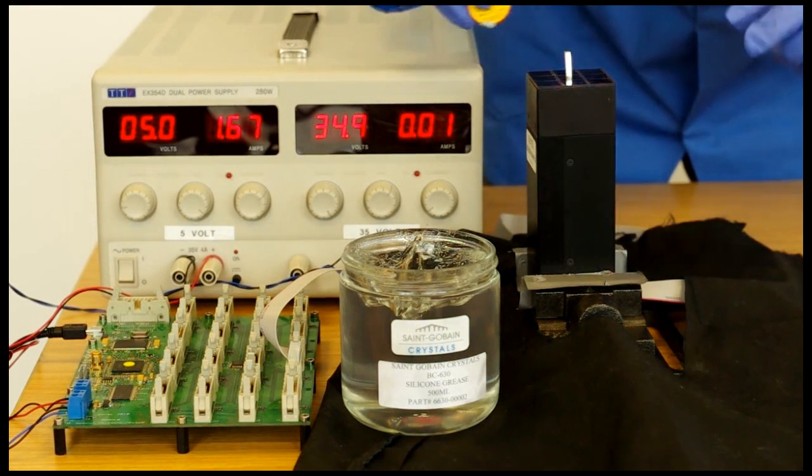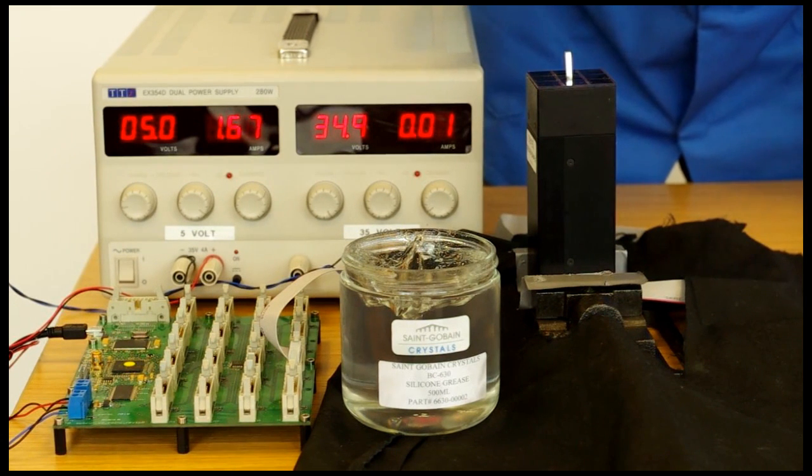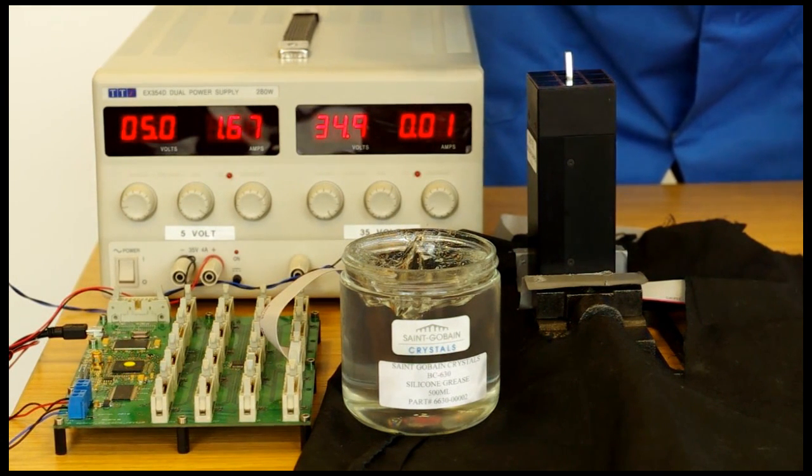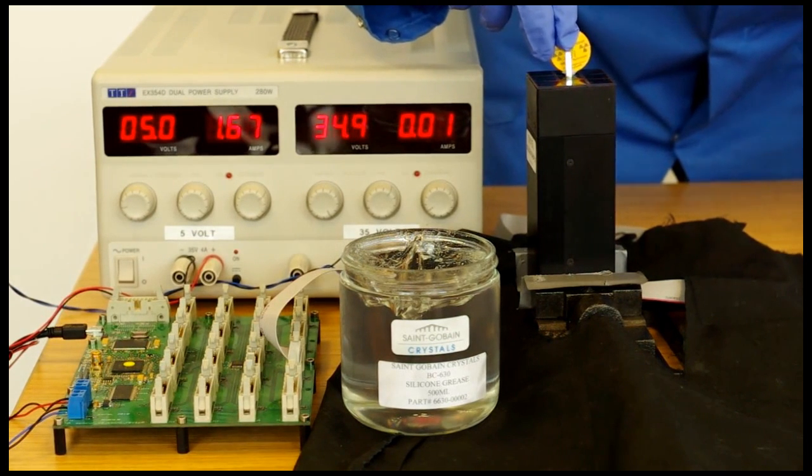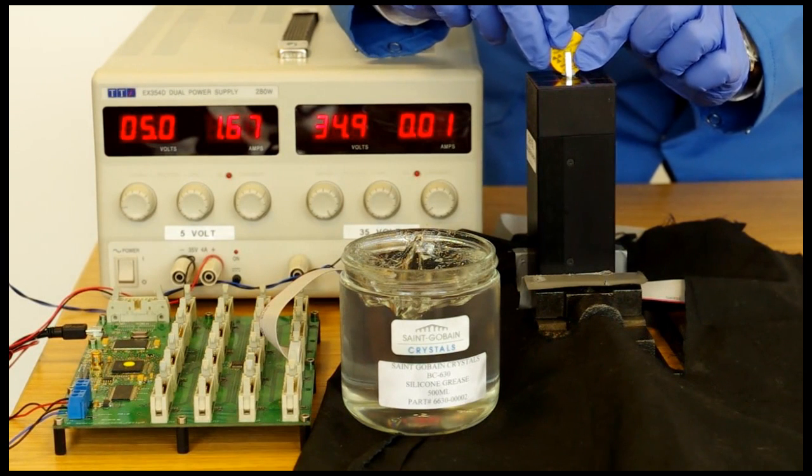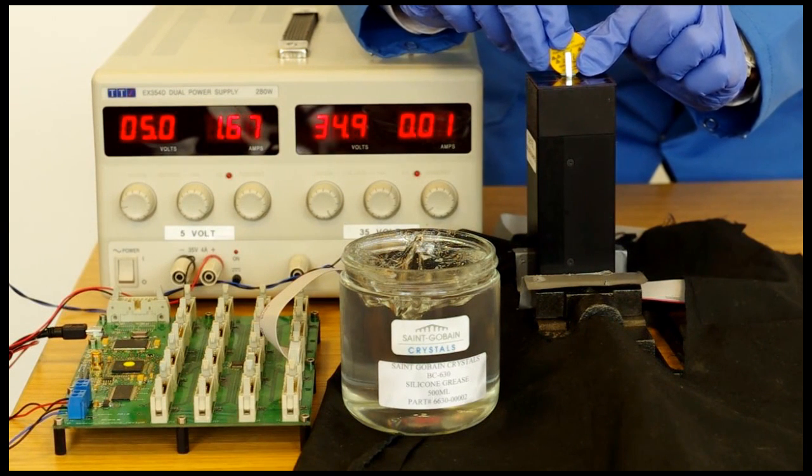And to put the calibration source into the system, this is a very low activity radioactive source. We typically would just place that with a bit of blue tack to mount it. We would place that directly behind the LYSO crystal.